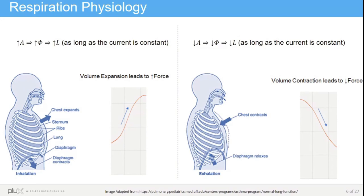On the other hand, when the diaphragm relaxes — as shown in the right figure — the chest contracts, increasing the pressure in the lungs, leading to the exit of air. This time, the cross-sectional area reduces, leading to the decrease of the other measures and thus of the measured signal.